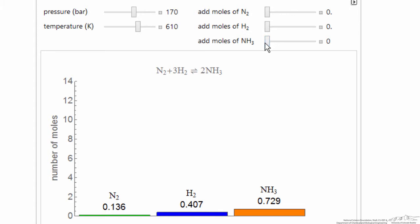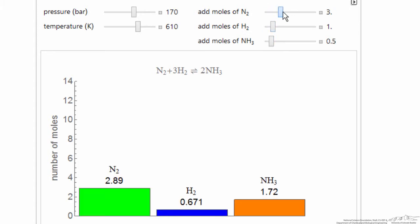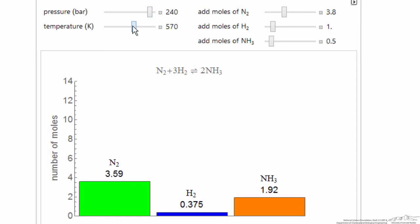But then we can increase the number of moles of ammonia or the number of moles of hydrogen or the number of moles of nitrogen and watch how equilibrium shifts. Likewise, we can increase the pressure and increase or decrease the temperature and observe what effect this has on the equilibrium.